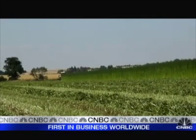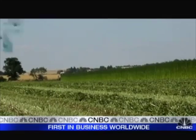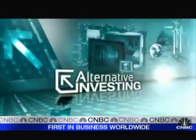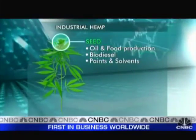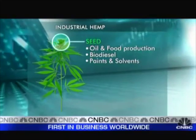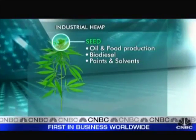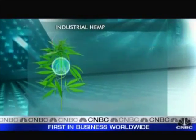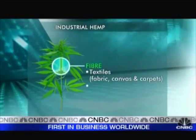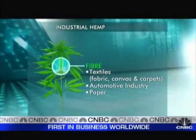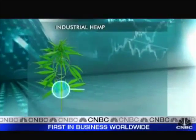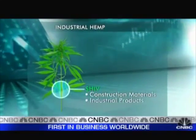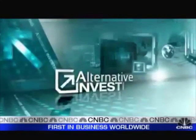Currently, about 15,000 hectares of hemp are being produced in the European Union. The seed produces food, biodiesel, and paints. The fibre from the stalk is where paper and textiles are derived from, while the shiv produces construction materials.